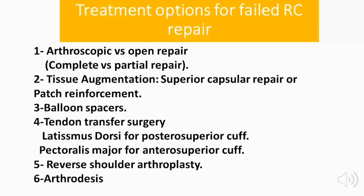Treatment options for a failed rotator cuff repair include arthroscopic versus open revision repair, tissue augmentation through superior capsular repair or patch reinforcement using balloon spacers, tendon transfer surgery, reverse shoulder arthroplasty, and finally arthrodesis.